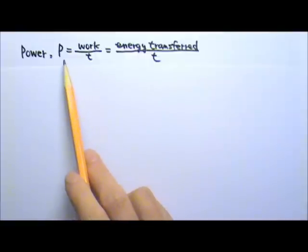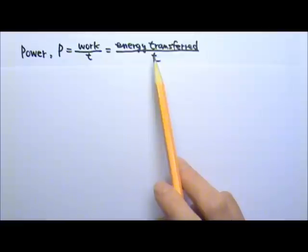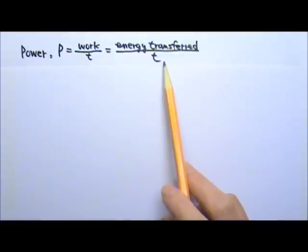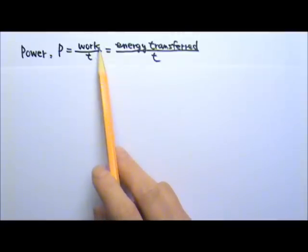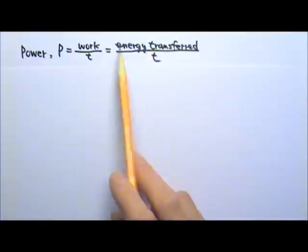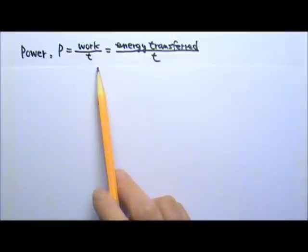In physics, we use big P for power, and it is defined as the rate at which work is done, or the rate at which energy is transferred. P equals work or energy transferred divided by time. So work over time gives you power.